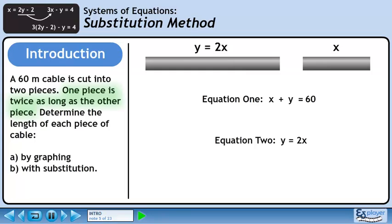Since the question tells us that the long piece is twice as long as the short piece, we can write this as Y equals 2X. This is our second equation.